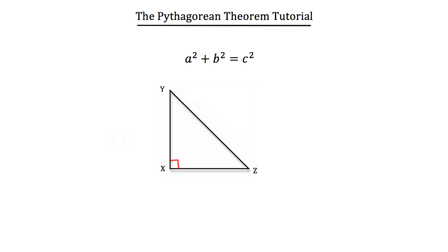So for example, we could say that this leg, leg XY, has a value of a. This leg on the bottom, XZ, has a value of b. And the hypotenuse of this triangle has a value of c.